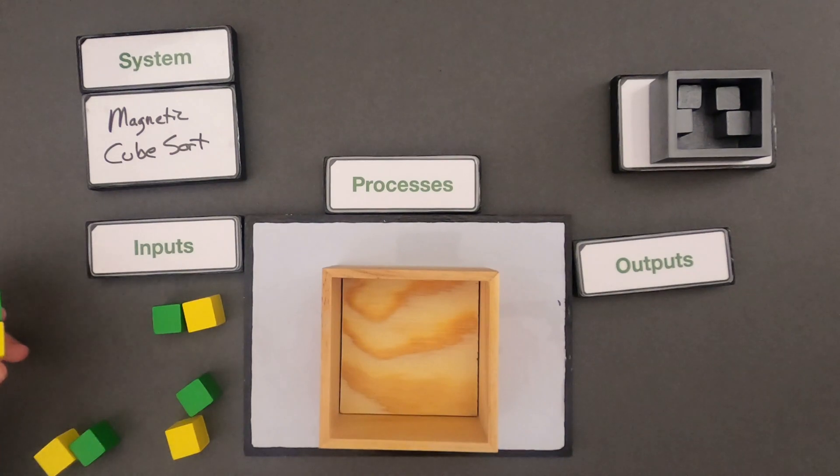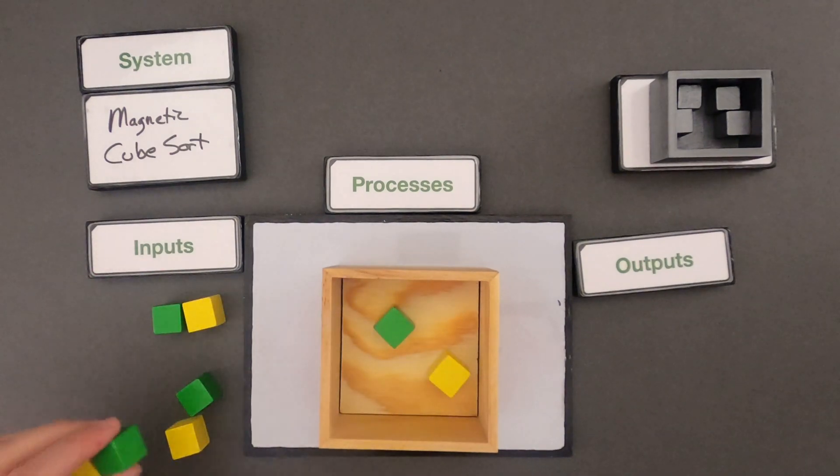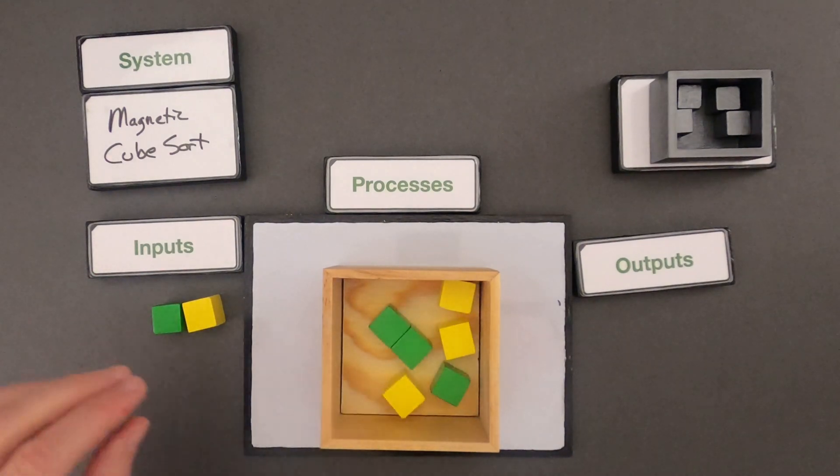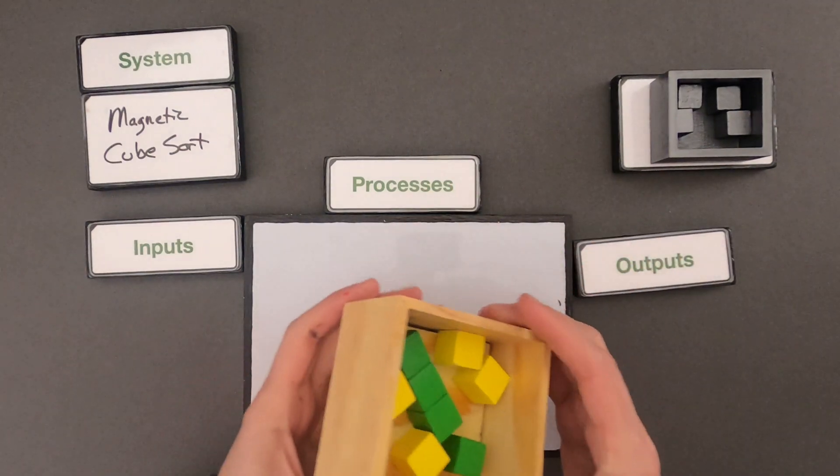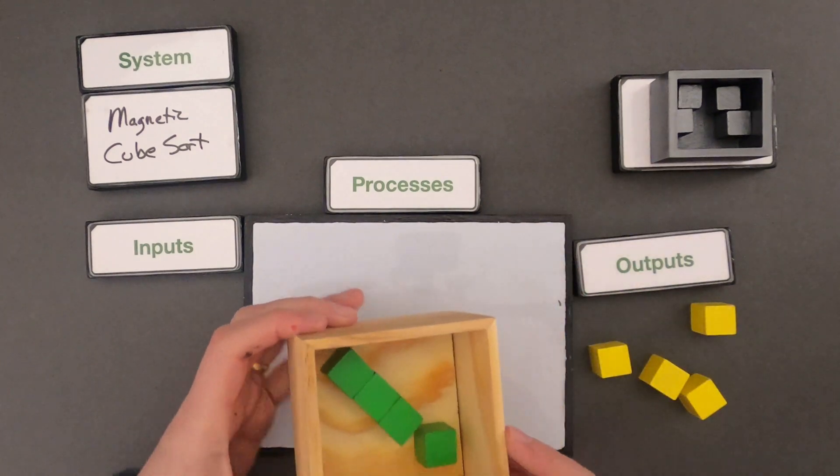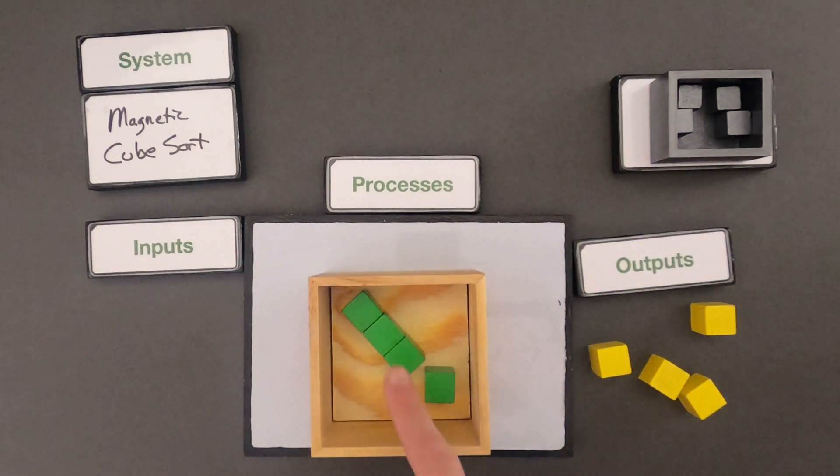So what I'm going to do is take these colored cubes, put them in. And I'm going to shake them around and I'm going to dump them out. So you can see that the green cubes are staying on the inside and the yellow cubes are moving out.